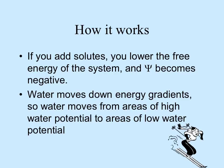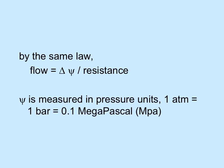Water moves down energy gradients, so water moves from areas of high water potential to areas of low water potential. The flow of water is equal to the difference in water potential over resistance. PSI, or water potential, is measured in pressure units: one atmosphere, or one bar, or 0.1 megapascals.